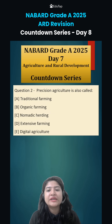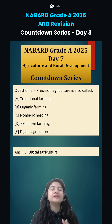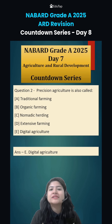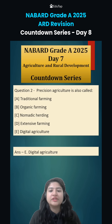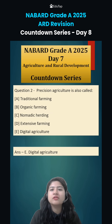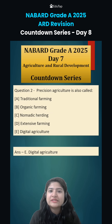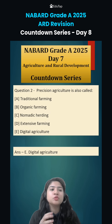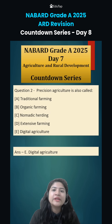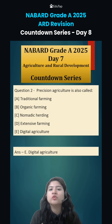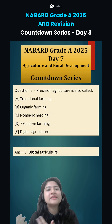Coming to question number 2, precision agriculture is also known as digital agriculture because it uses AI and data technology. The aim is to use technologies like GPS, satellite imagery, and other AI tools to properly survey a particular area, so that only the actual inputs required are given. This way, input cost is very low and we achieve desirable productivity.